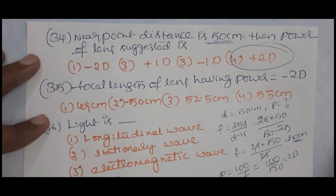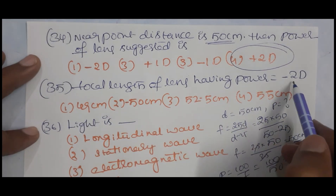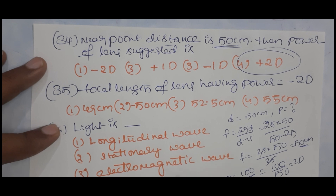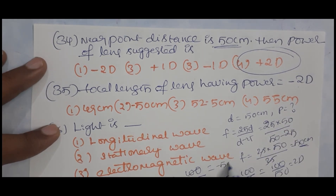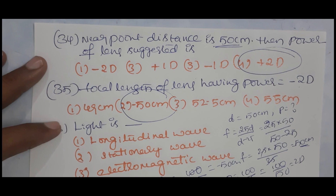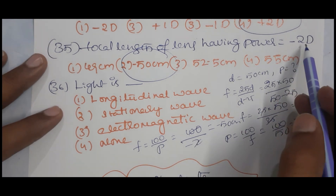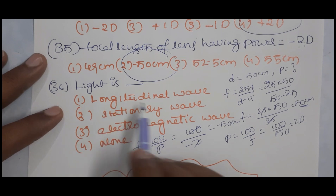If the power of a lens is −2 diopters, then the focal length is f = 100/P = 100/(−2) = −50 centimeters.